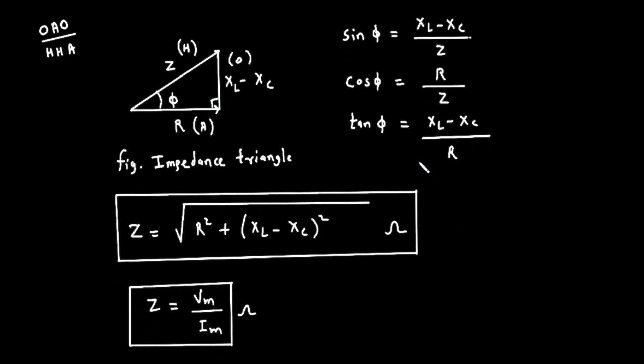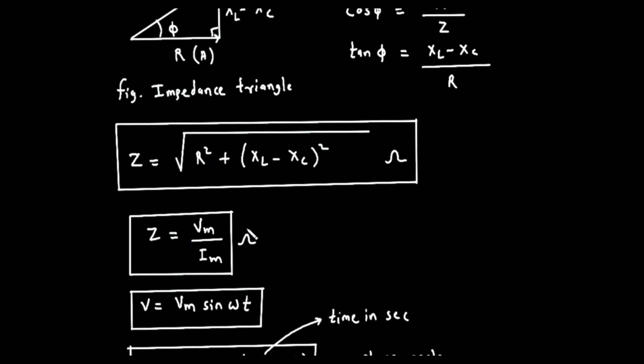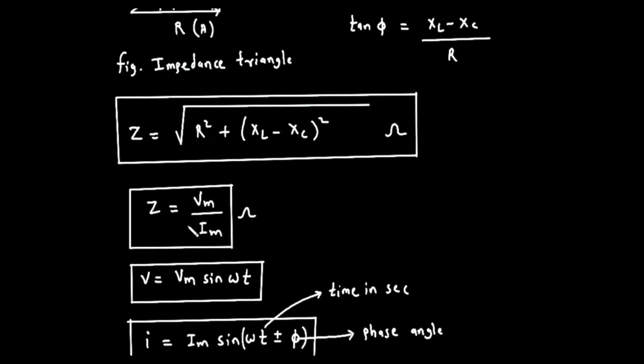We can also apply the Pythagorean theorem, which states that the square of the hypotenuse is equal to the sum of the squares of the other two sides. For our impedance triangle, this means Z squared equals R squared plus the quantity, X sub L minus X sub C, squared. To get the final formula for impedance, we just take the square root of both sides.